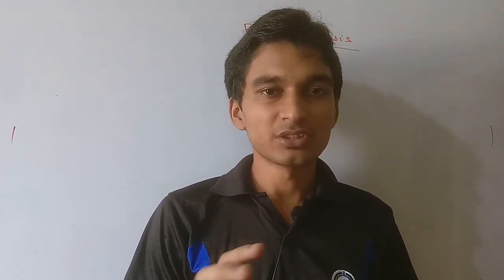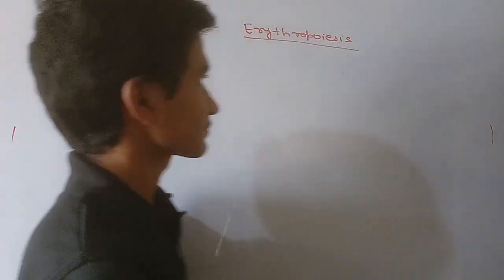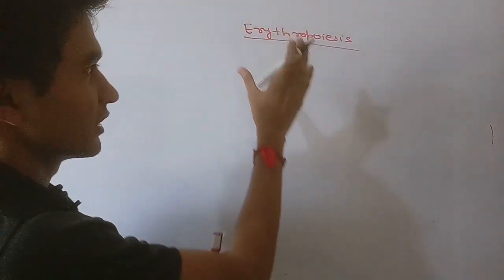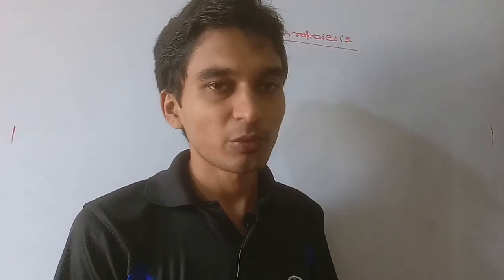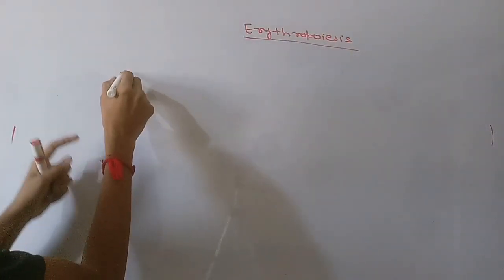Today we are going to discuss erythropoiesis, that is the formation of RBC. As we all know, RBC lifespan is only 120 days, so RBC must be continuously replaced. There is a process which is undergoing all the time — erythropoiesis. We will discuss the process of erythropoiesis and then the factors affecting it.